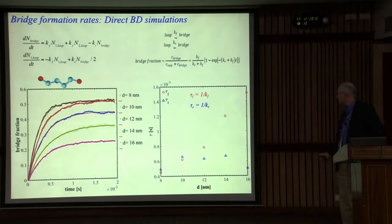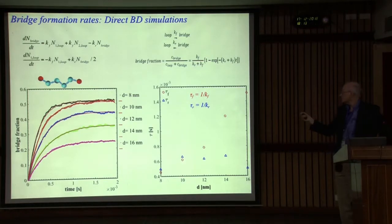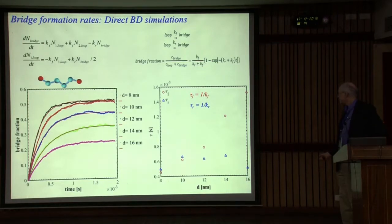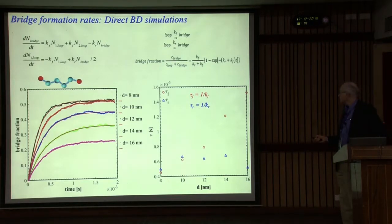Going forward from loop to bridge requires not only breaking a hydrophobic interaction to the surface, but also stretching the chain out to reach another particle. As the gap increases, the time to form a bridge gets higher and higher, eventually beyond what we can simulate directly. So we need an enhancement — a way to reach longer times.